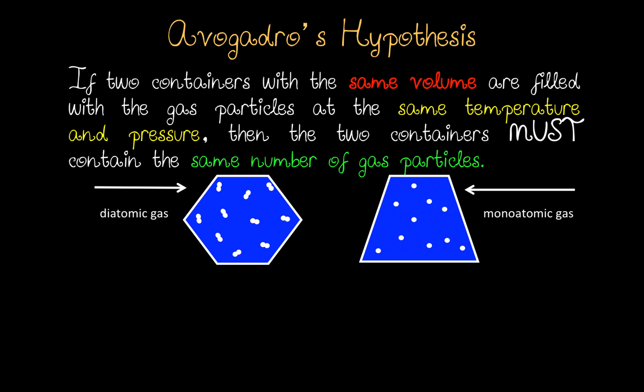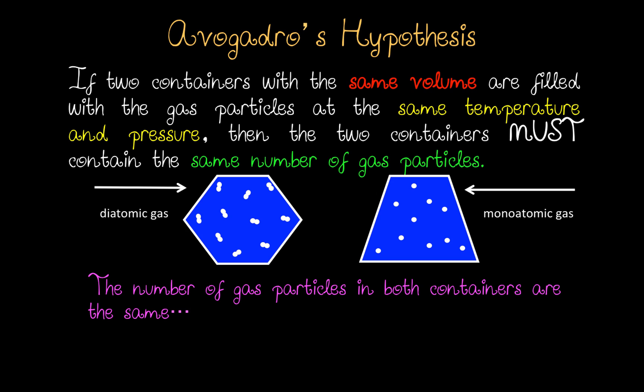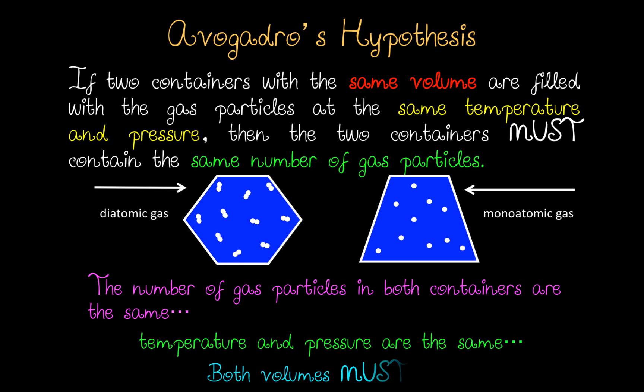Therefore, if two containers with the same volume are filled with gas particles at the same temperature and pressure, then the two containers must contain the same number of gas particles. The container on the left is made up of a diatomic gas; the container on the right is made up of a monoatomic gas. The number of gas particles in both containers are the same — ten molecules on the left, ten atoms on the right — and the temperature and pressure are the same, so both volumes must be the same.